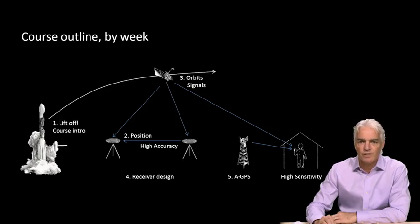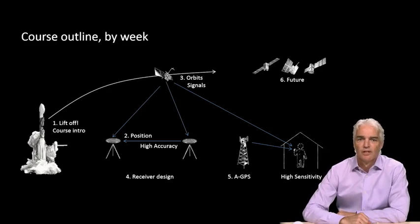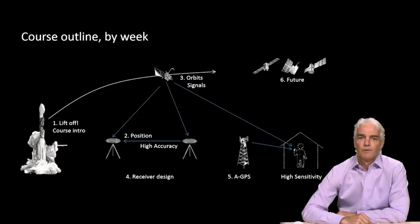Finally, in week six, we will look at future GNSS, including other GPS-like systems, such as GLONASS from Russia, BEIDO from China, GALILEO from Europe, QZSS from Japan, and IRNSS from India.